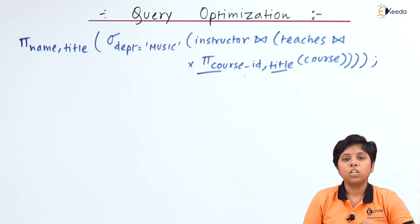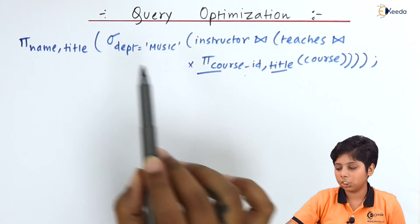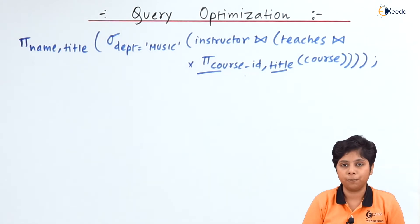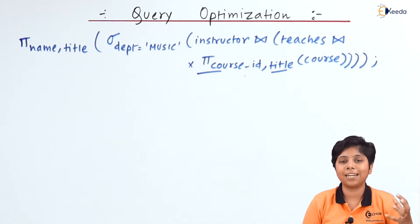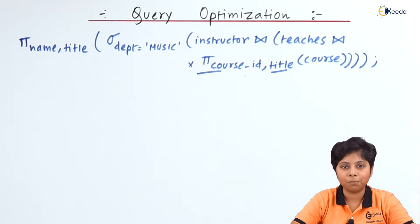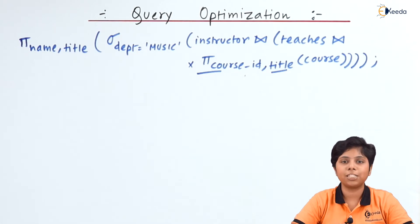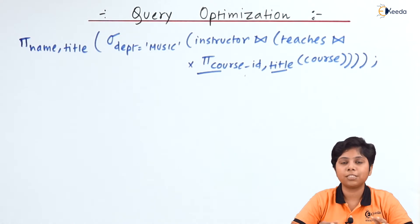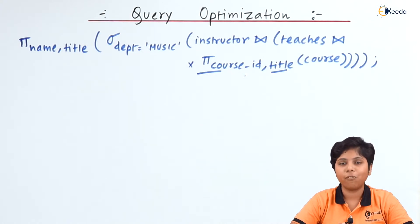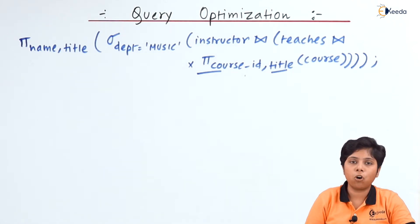The join of instructor, teaches, and course will select only music department instructors since the department music is given as a selection condition to the instructor relation. Now if we apply the projection here and the selection here, it will first select the music department and then give the course ID and title. It is always better in query optimization to choose selection over projection.